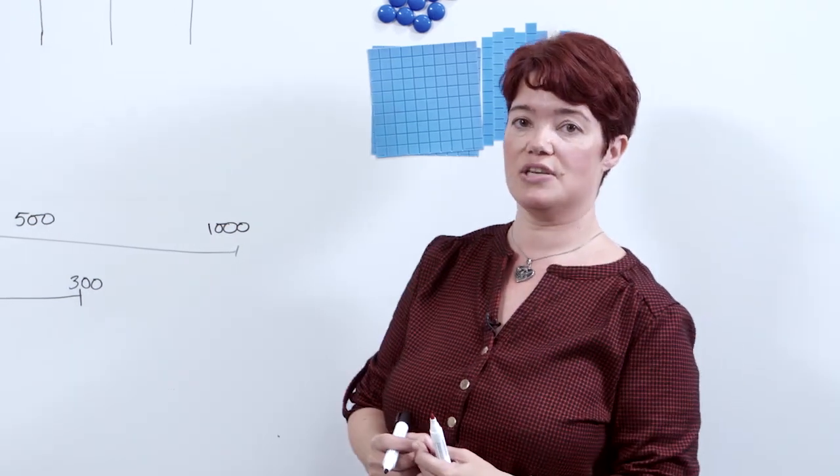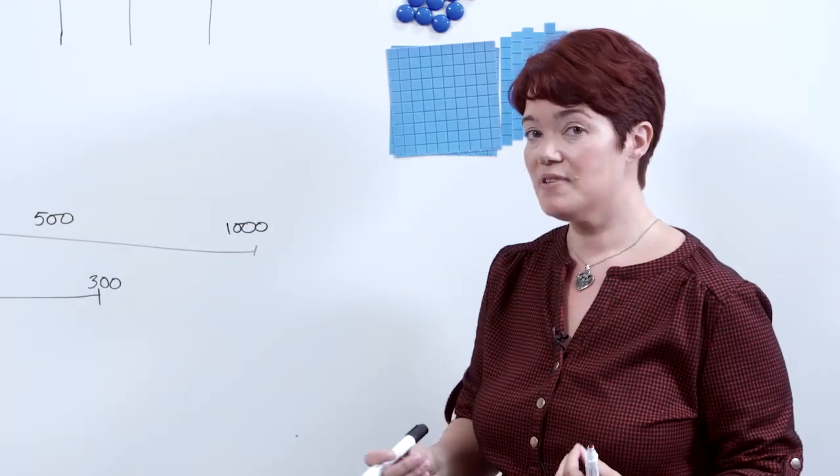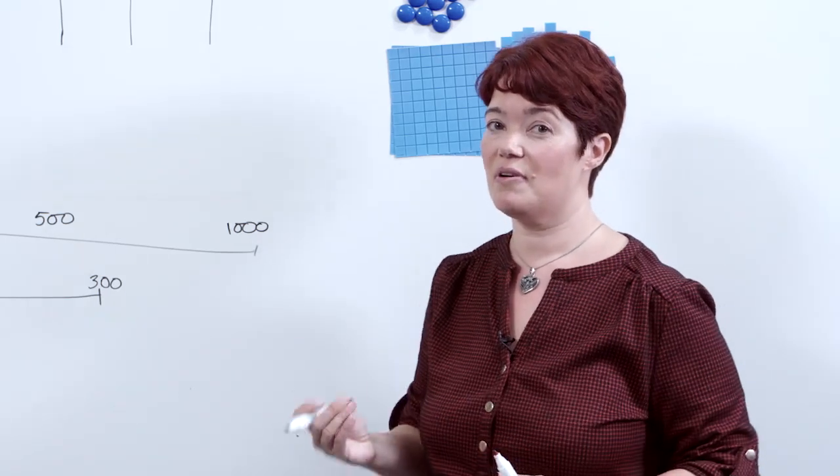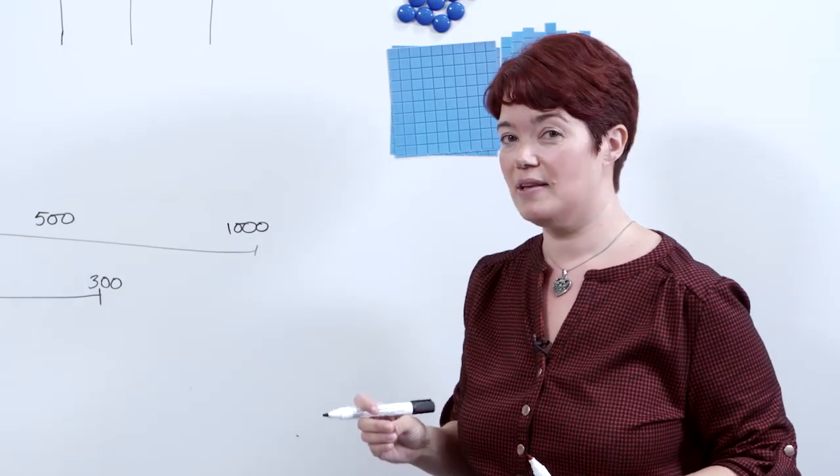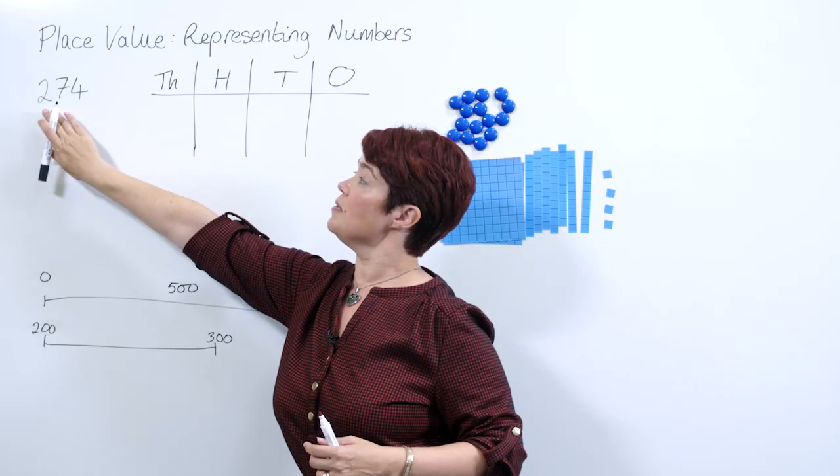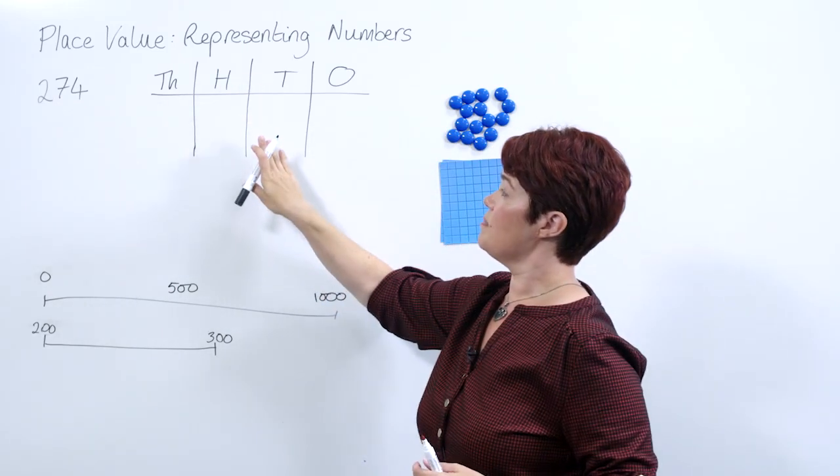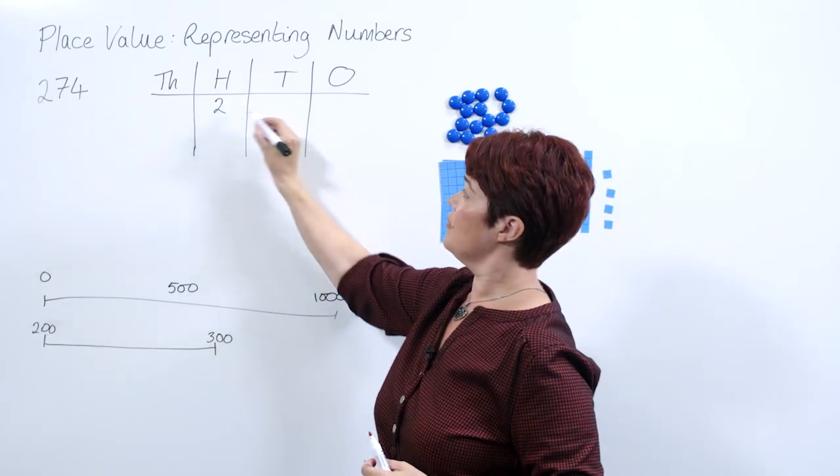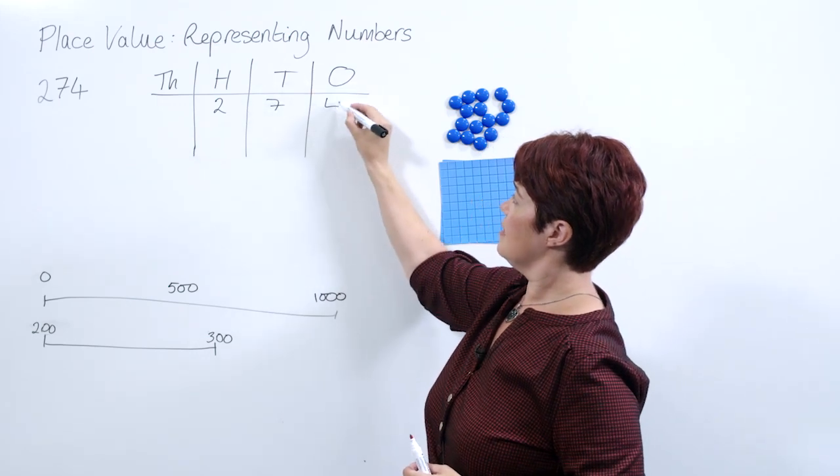We're going to start with a three-digit number. Remember from our previous videos, the digits don't take a numerical value until we have them in their place value. We're going to start with the number 274.